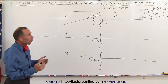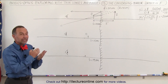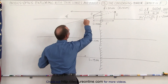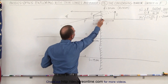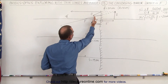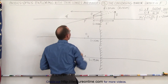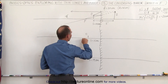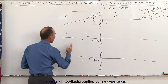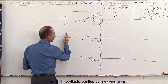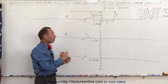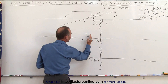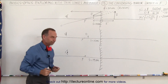Welcome to Lecture Online. In this video we're going to talk about what happens to the image as the object is first placed halfway between the focal point and the mirror. It's a converging mirror, and then we're going to move the object closer and closer to the focal point from between the mirror and the focal point. We started with the object farther away than the focal point and moved it closer; now we're going to start from inside the focal point and move it towards the focal point.